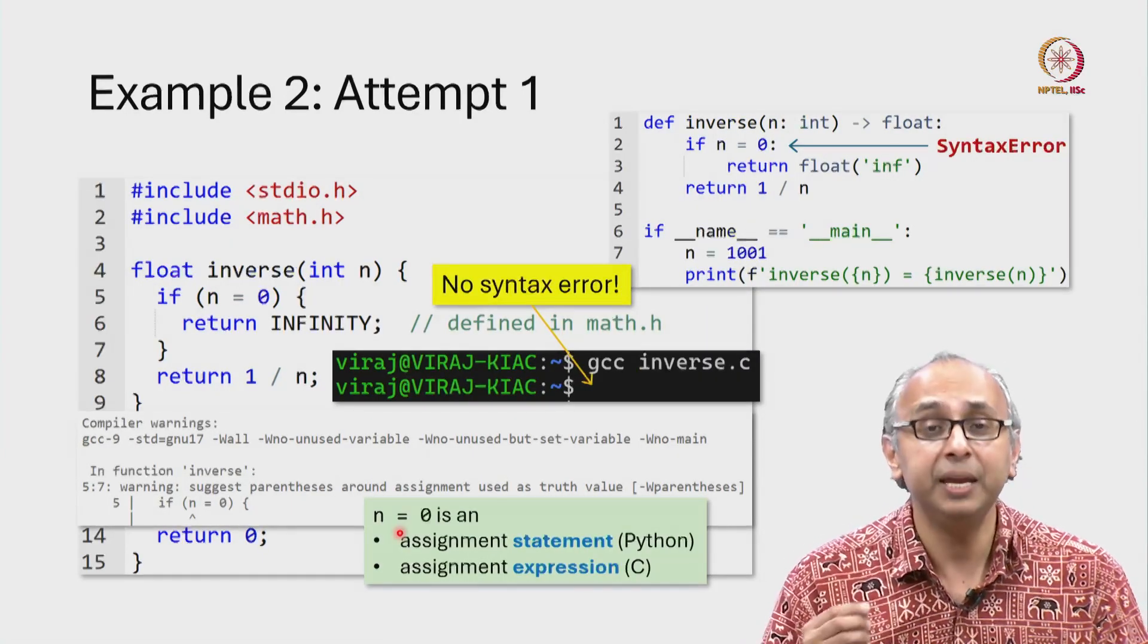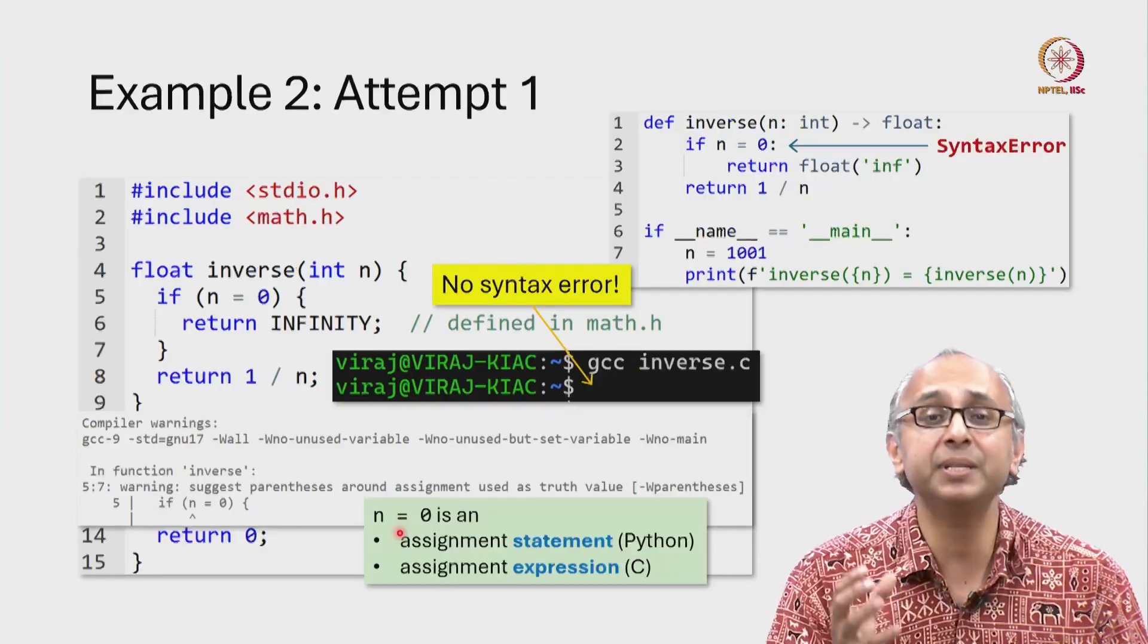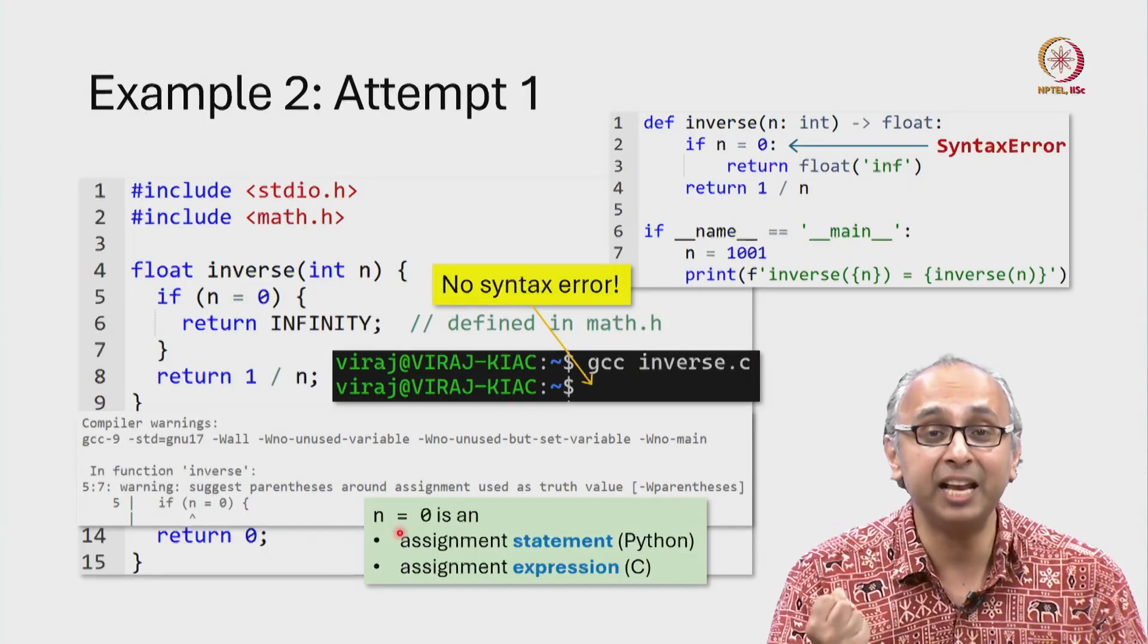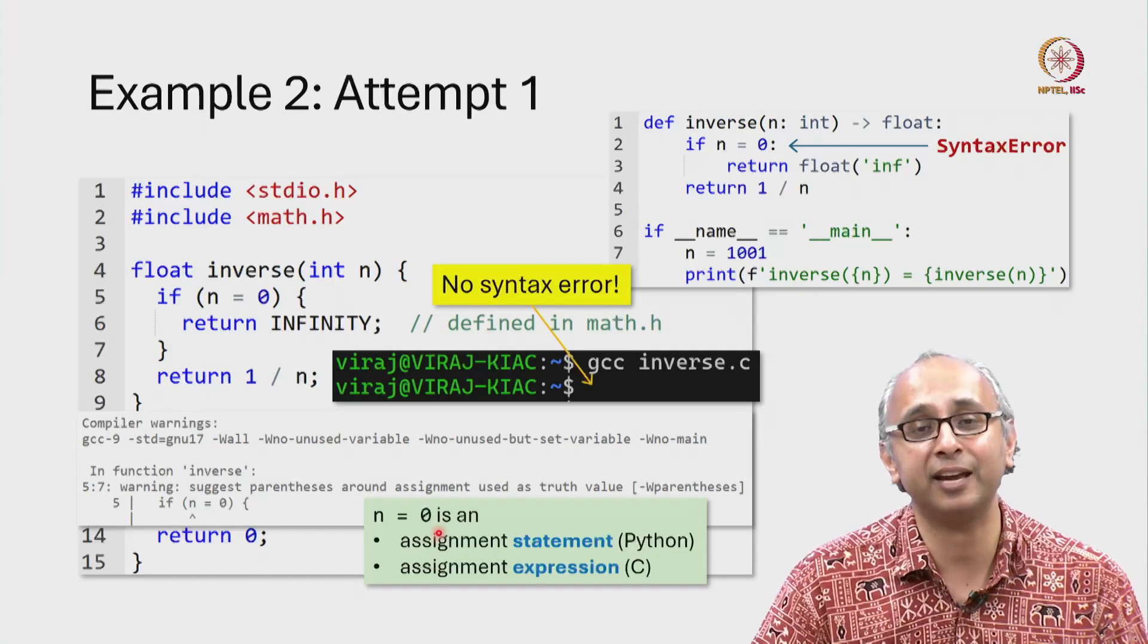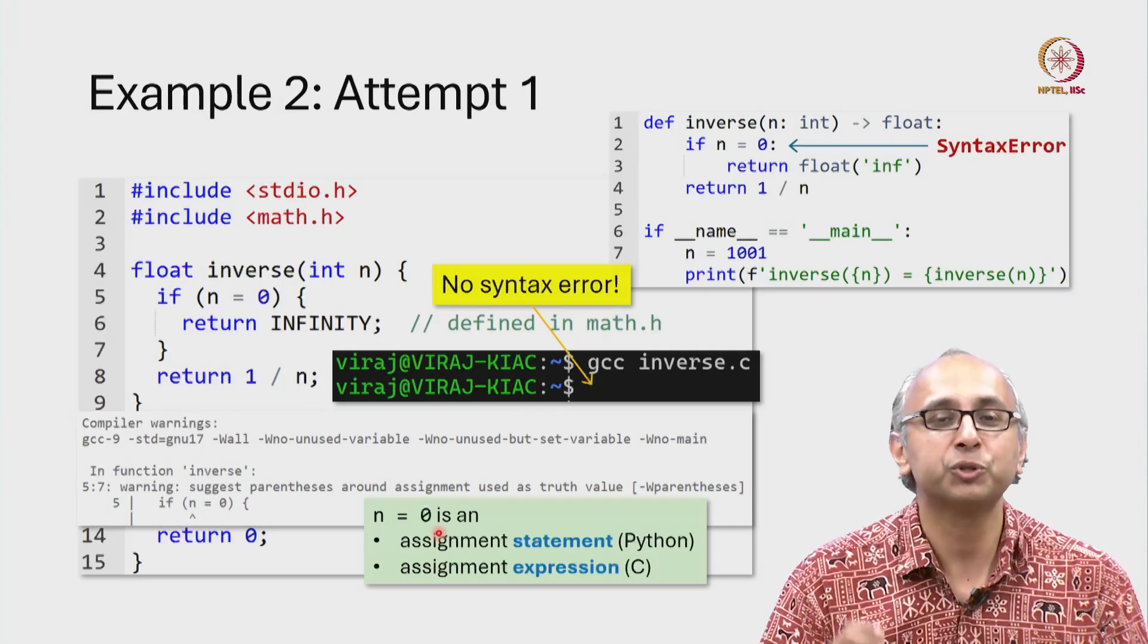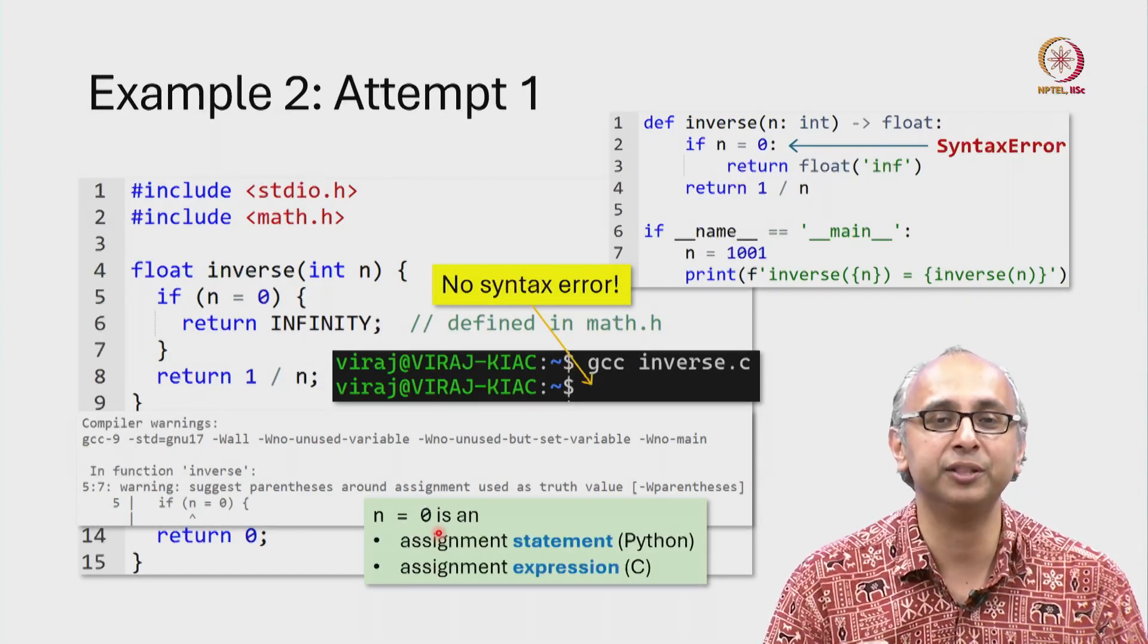In particular, an assignment in C evaluates to a value which is whatever is on the right hand side of the assignment. So to understand what is going on in the C code, let us go back to Python tutor and follow the steps until we hit the error.